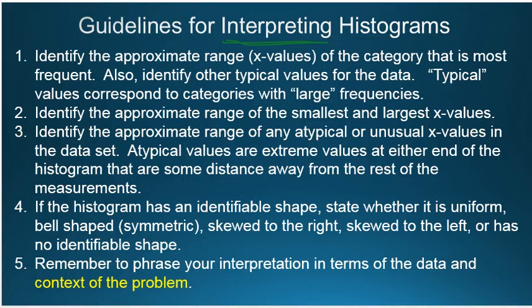Lastly, step four, if the histogram has an identifiable shape, state whether it's uniform or bell shaped, symmetric, skewed to the right or skewed to the left or has no identifiable shape.